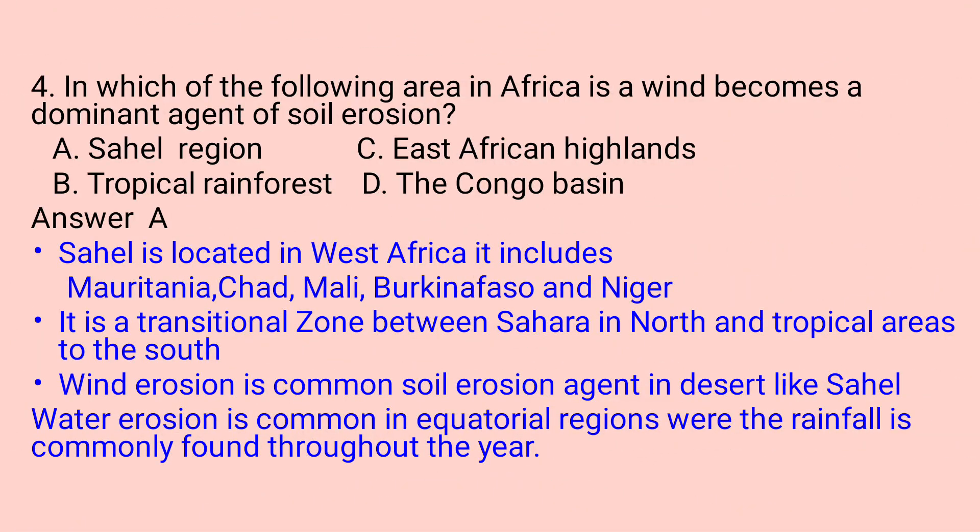Question number four: In which of the following areas in Africa does wind become the dominant agent of soil erosion? A. Sahel region. B. Tropical rainforest regions. C. East African Highlands. D. The Congo Basin.